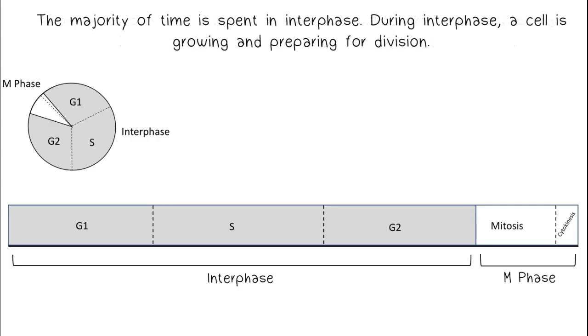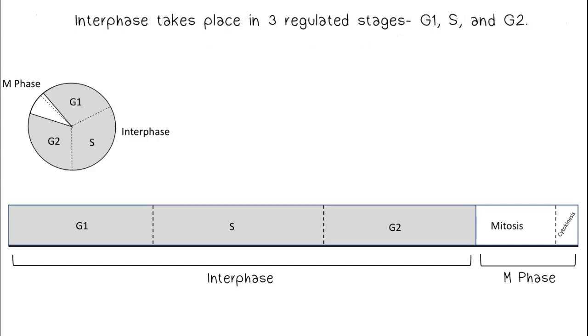The majority of time is spent in interphase. During interphase, a cell is growing and preparing for division. Interphase takes place in three regulated stages: G1, S, and G2.